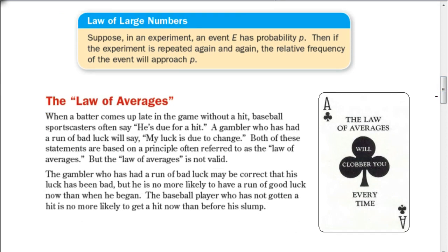You might have heard of the law of averages, where someone having a string of bad luck says that due to the law of averages, they should win next time because they're bound to win sometime. Well, the law of averages really is inaccurate, because the probability every time you do something is always going to be the same. Before the string of bad luck, after the string — every single time you do it, you have the same probability. So there really is no such thing as the law of averages. The law of large numbers is true: the more we repeat a probability experiment, the closer we approach the expected outcome. But that does not mean that on the next turn you have any more of a chance than you did on the previous turn.